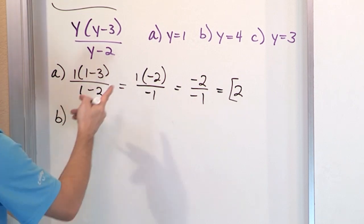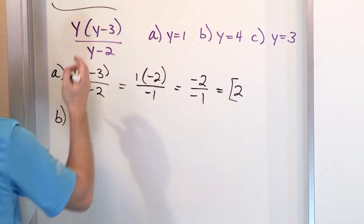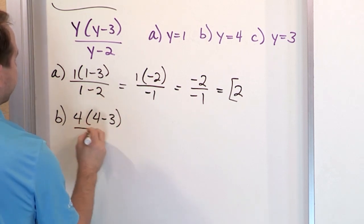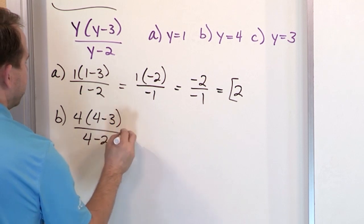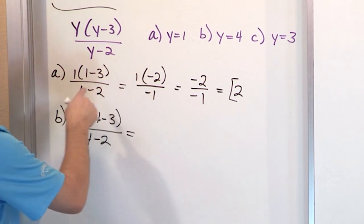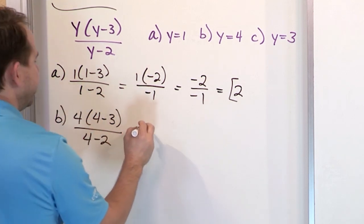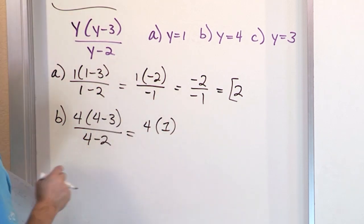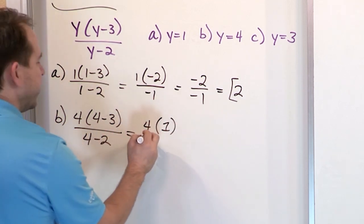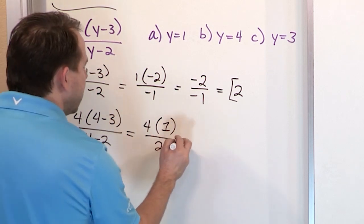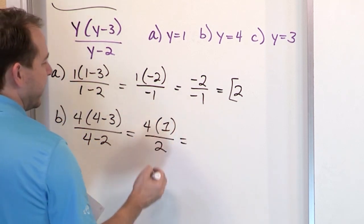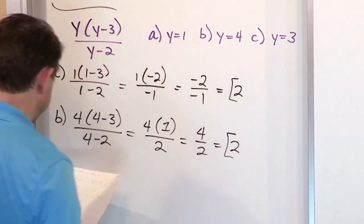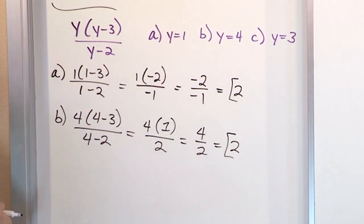Part B: same calculation but y equals 4. We have 4 times (4 minus 3) over (4 minus 2). Focus on the numerator inside: 4 minus 3 is 1. On the bottom, 4 minus 2 is 2. On the top, 4 times 1 is 4 over 2, which gives you exactly 2. Positive divided by positive gives you 2.